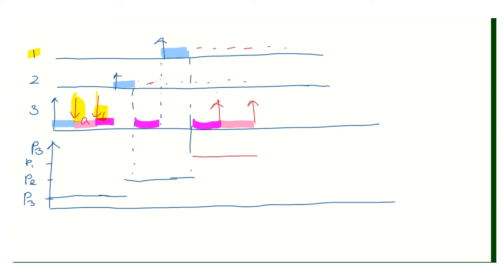Now both resources A and B are released. Since task three has finished all its critical section activity and every other work, its priority returns to the normal lowest priority. Of the available tasks — task one and task two — task one has the highest priority and was waiting for critical section A. Since A is now available, task one executes critical section A.